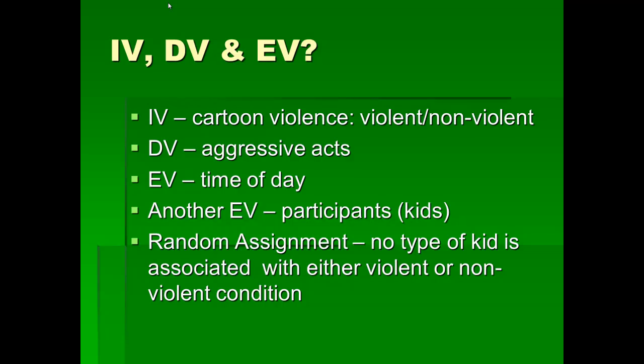You could say, and you would be correct, that another extraneous variable is the participants — that is, the students. However, since we randomly assign the students to conditions, no special type of kid is associated with either the violent or nonviolent condition. Since there are no systematic differences between the kids in one condition versus another, we can say that we've controlled for that.